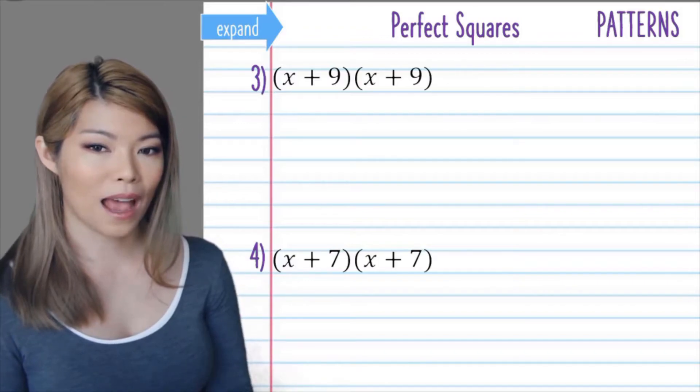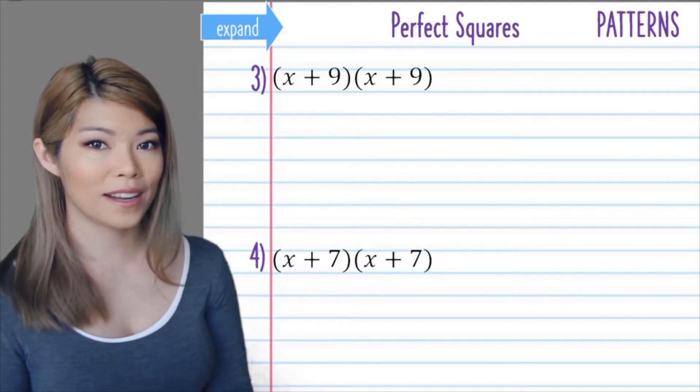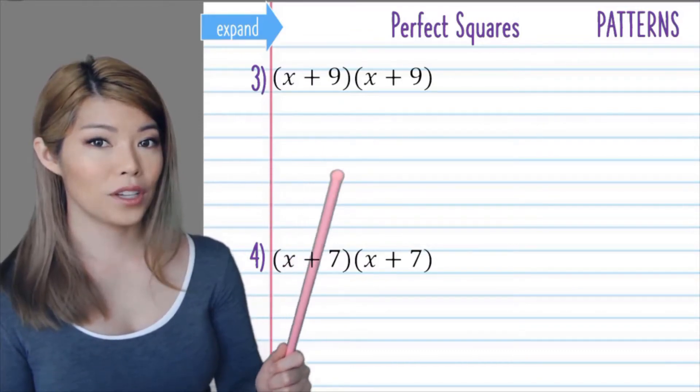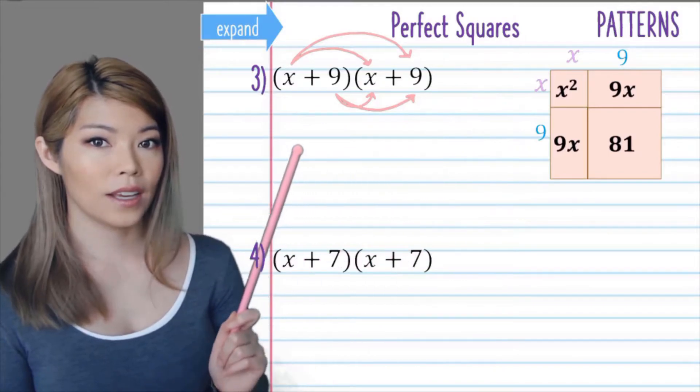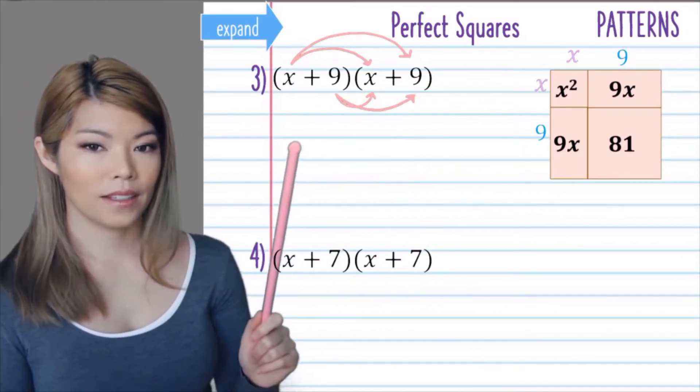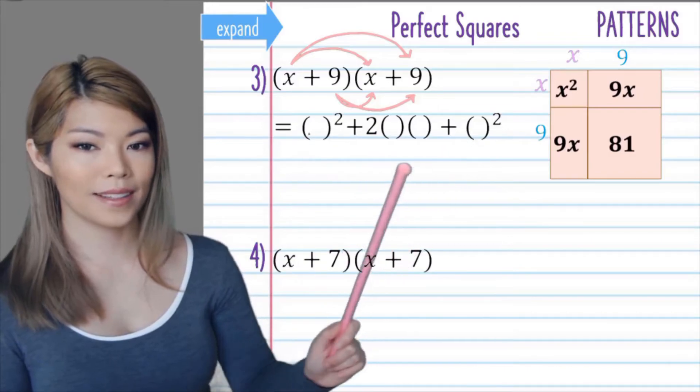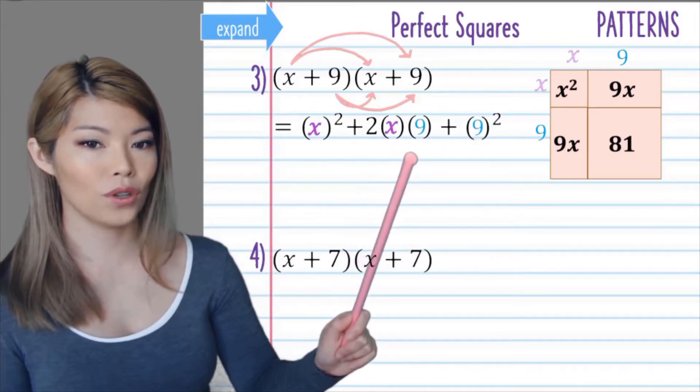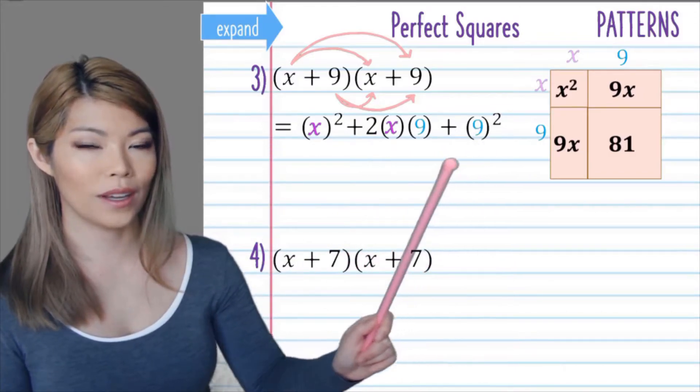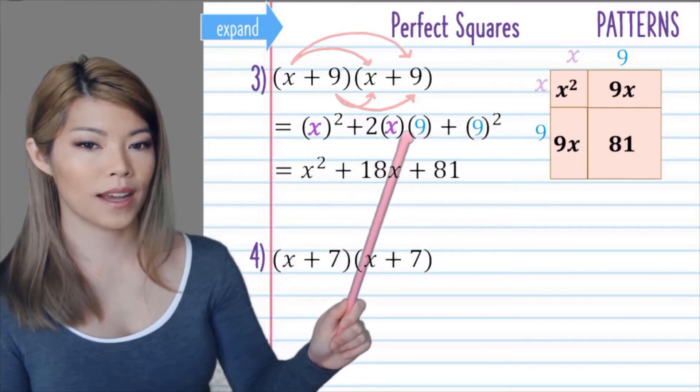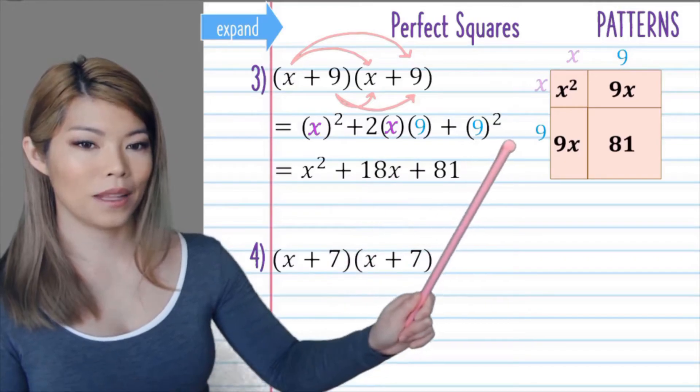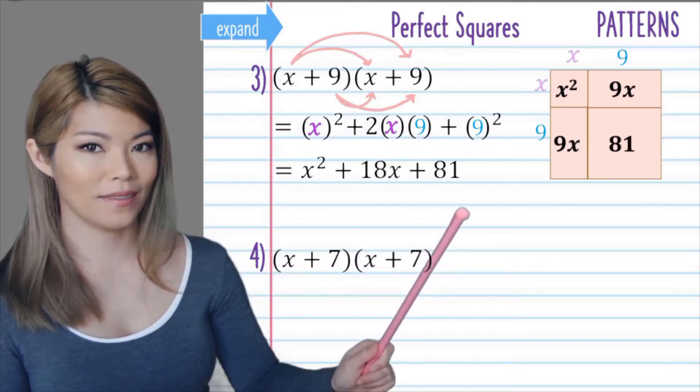Let's have a look at some examples. You can pause the video and try it yourself. We can visualize the answer and double check that using the pattern gives us the same answer. Use the brackets and put x in the first two and 9 in the second two. Now let's evaluate this. We have x squared plus 2 times 9 is 18x plus 9 squared is 81.